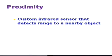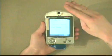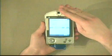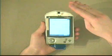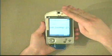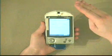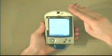Our proximity sensor is a custom infrared sensor that detects range to a nearby object. Here we see a simple application of zooming a font on the screen. This is just a demonstration of the sensor and not really intended as an end-user application.